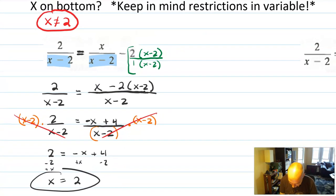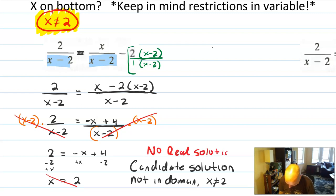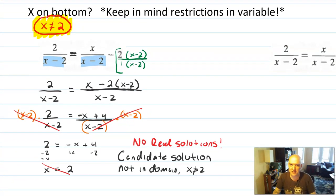That's my answer. Except, wait a minute, look at what I said right at the start. x can be anything except positive 2. So, this is a situation where, if there were a solution, it would be 2. But, it turns out that x equals 2, which is what we call the candidate solution, does not work. It's not in the domain. So, it turns out, in this case, there are no real solutions, which can happen. It's not common, but it's also not rare.